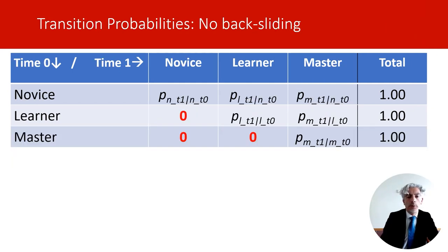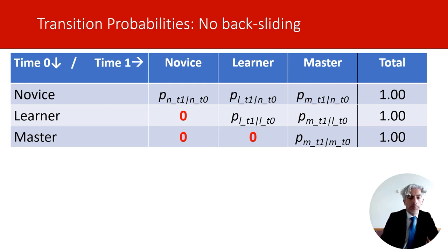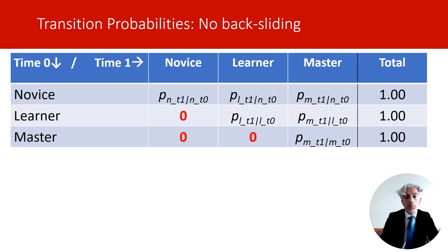In a similar manner, we can formally test other hypotheses about transitions across age. Here I present a fictional example of a stage-like model of skill mastery, where individuals may be novices, learners, or masters at a particular skill set. Our model may state that we should not observe individuals backsliding — that is, moving from master to novice level — and that such transitions are only observed because of random variation. We can test this hypothesis by comparing a model with freely estimated transitions against a model where backsliding probabilities are constrained to zero. A likelihood ratio test comparing the two models provides a formal test of this hypothesis.